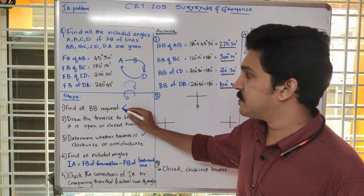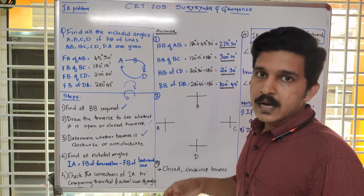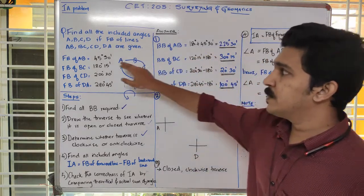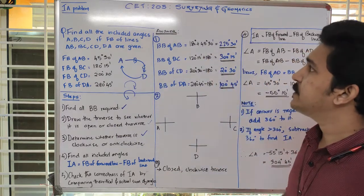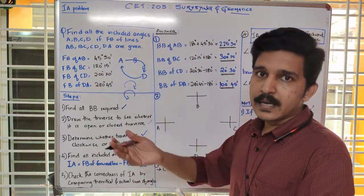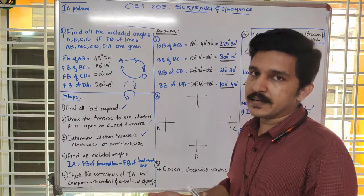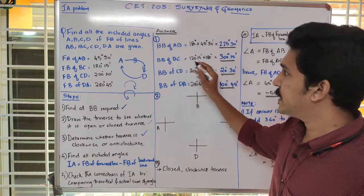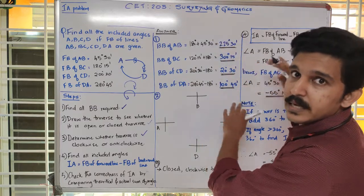Let us start with the first step: finding all the back bearings. We already discussed how to find back bearings when fore bearings are given — we add or subtract 180 degrees. Since the fore bearing of AB is less than 180 degrees, we add 180 to get the back bearing of AB as 225 degrees 30 minutes. Similarly, we can find the back bearings of all lines AB, BC, CD, and DA.